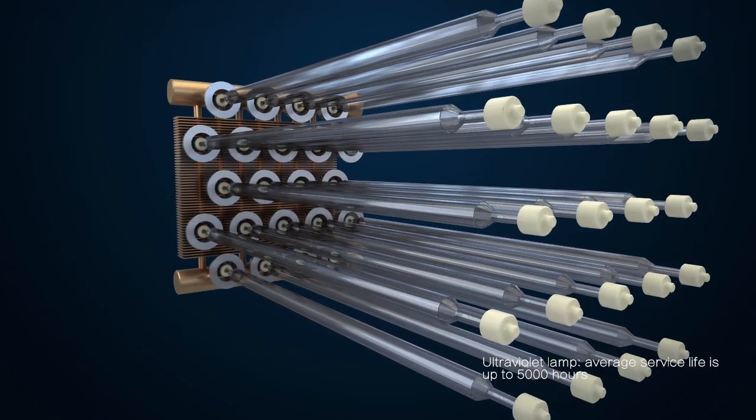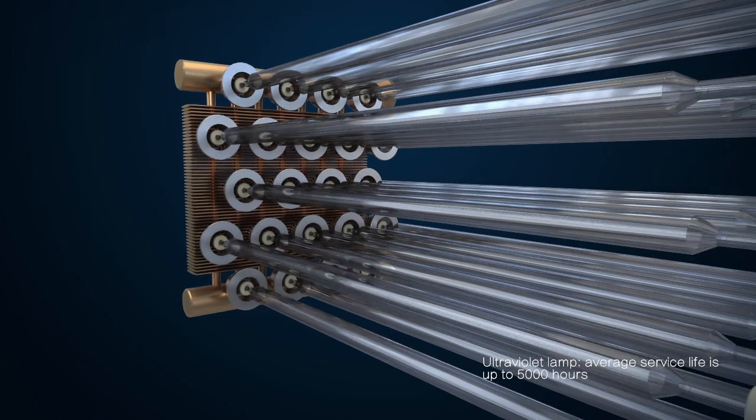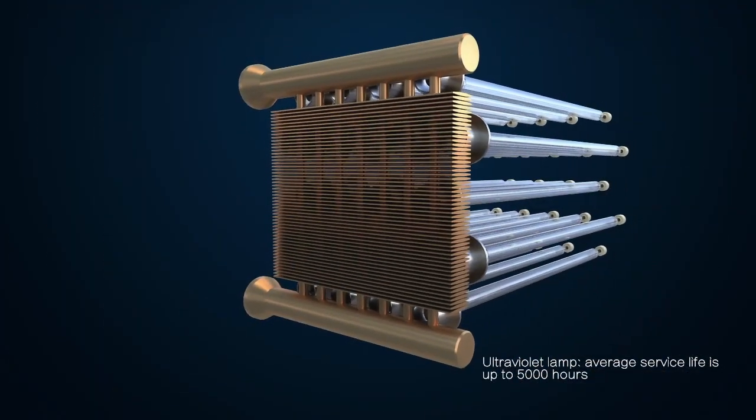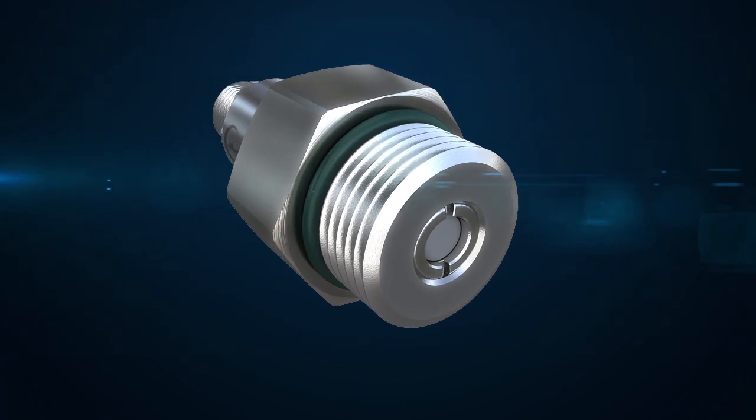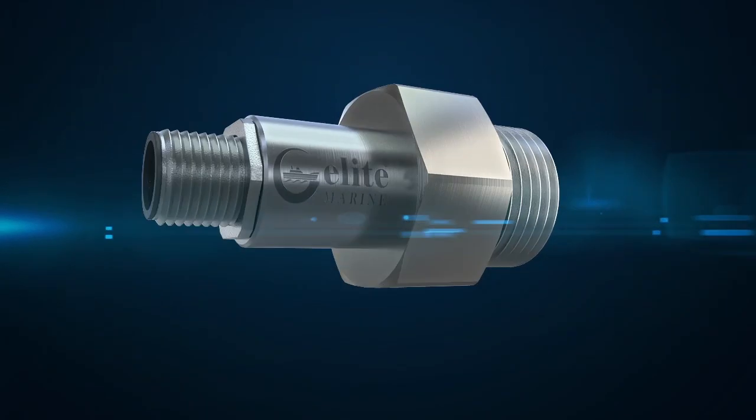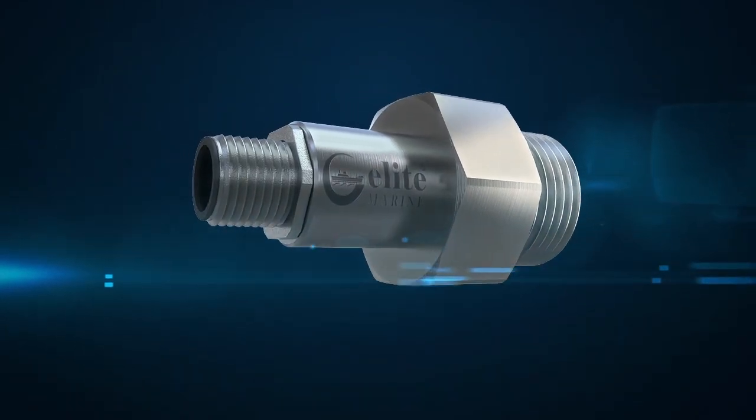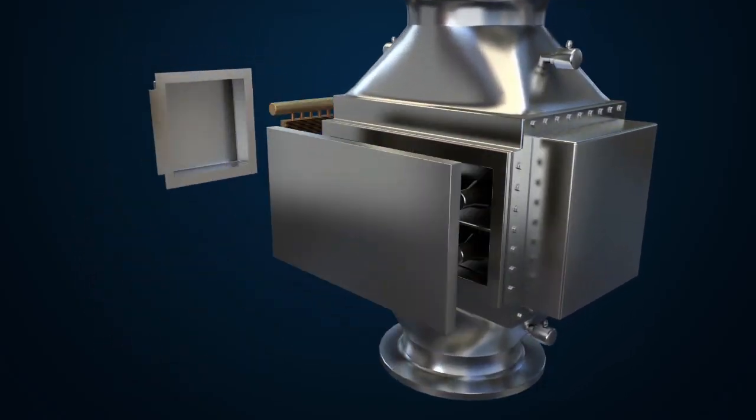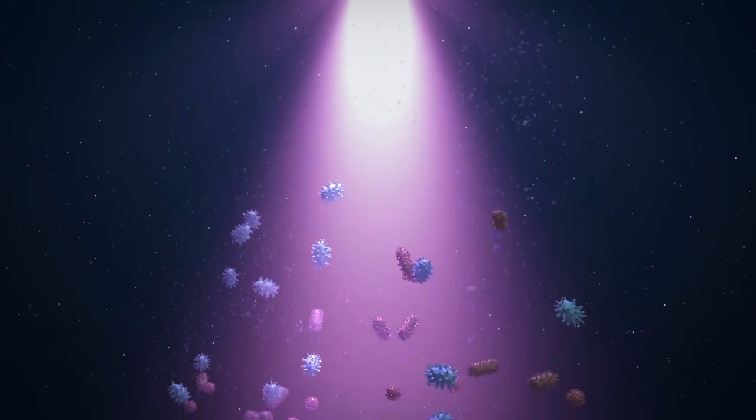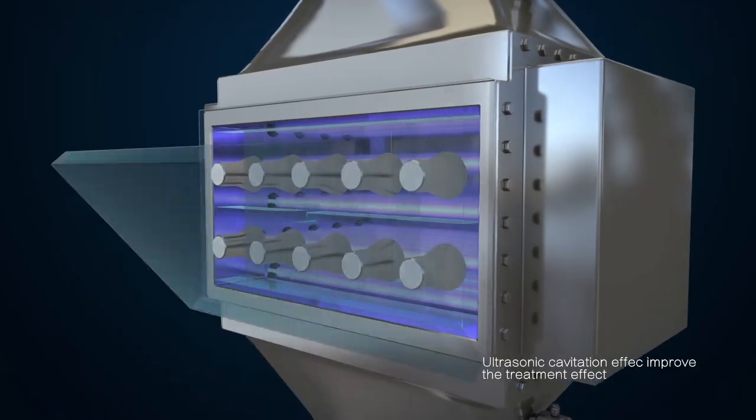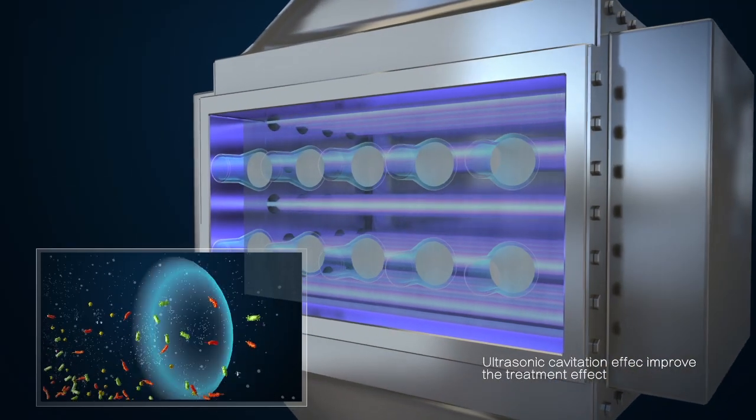The ultraviolet lamp adopts UV C band of high conversion rate and both sides equipped with cooling device. Adopt UV sensor to detect the transmission in order to adjust the output power of UV lamp. Ultraviolet radiation can destroy biological genetic material and kill organisms. Ultrasonic cavitation action also improves the treatment effect.